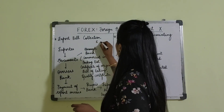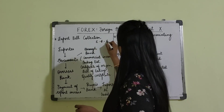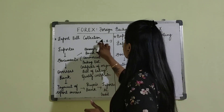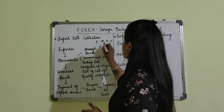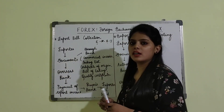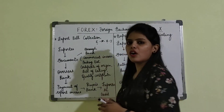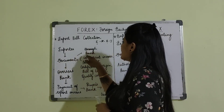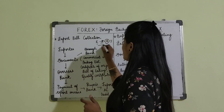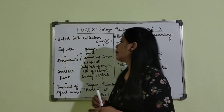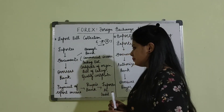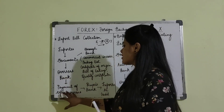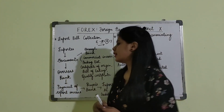The chain is: exporter → exporter's bank → buyer's bank → importer. This is the sequence or chain of the working of the export and import procedure. The exporter will send the documents through its bank to the overseas bank. Then the overseas bank will make the payment of the export invoice.